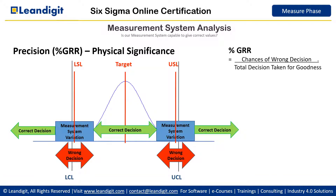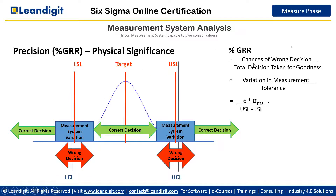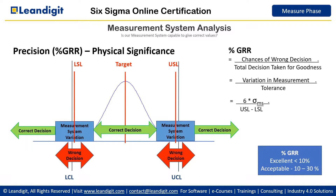Percentage GRR represents the chances of a wrong decision — that is, the measurement system variation — divided by the total tolerance for goodness, which is the specification width. Variation in measurement is six times the measurement system standard deviation, and tolerance is USL minus LSL. This ratio is called percentage GRR. If this value is less than 10%, we say our measurement system is excellent. If it is between 10% and 30%, it is acceptable. Beyond 30%, the measurement system must be rejected and improved.